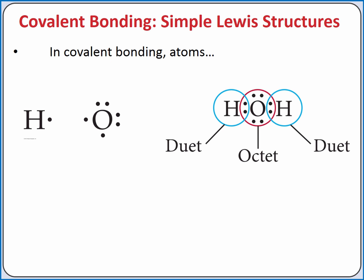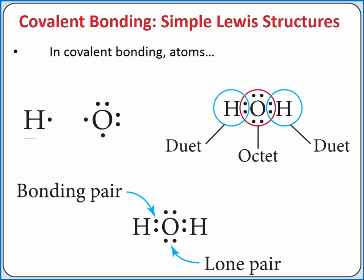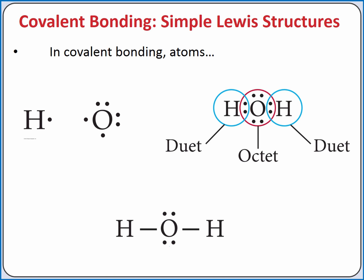In this Lewis structure for water, we have two types of electrons. Bonding pairs of electrons are shared between two atoms, and lone pairs of electrons are considered on a single atom. A bonding pair of electrons can also be shown as a line to represent a single bond.